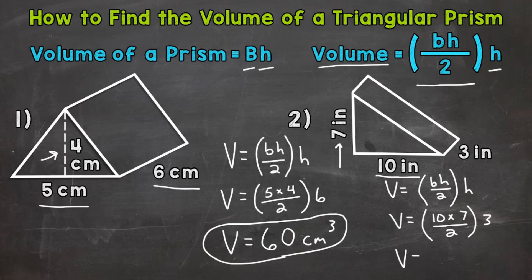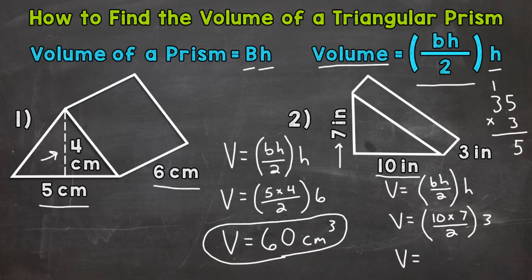So we end up with 10 times 7, which is 70. 70 divided by 2 is 35. So we need to solve 35 times 3. If we can't solve that using mental math, that's okay — come to the side to work through that problem. 3 times 5 is 15, 3 times 3 is 9, plus 1 is 10. So we get 105. Our volume is 105 cubic inches.